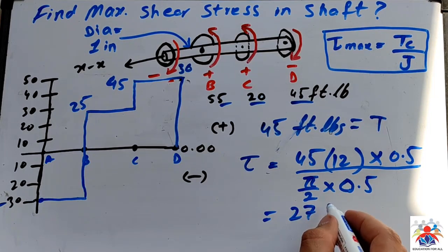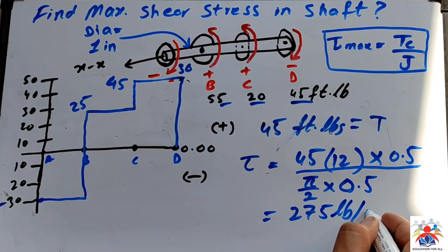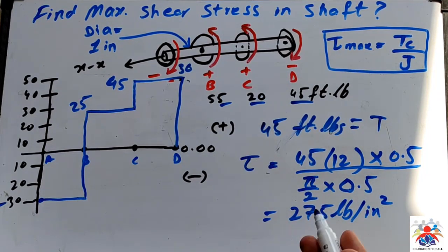So if we calculate, if we put that into our calculator, we will get 2,750 pounds per square inch. And if I convert into ksi, then that will be 2.75 ksi.